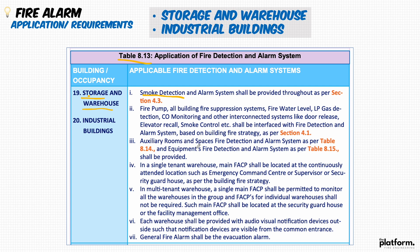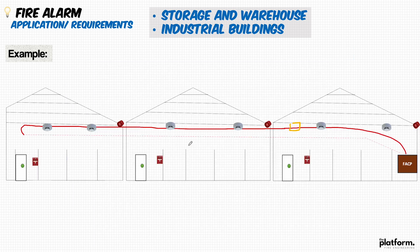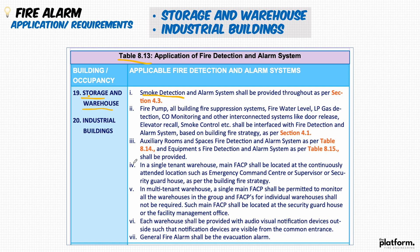Point number three: auxiliary rooms and spaces — the fire detection and alarm system should be provided there as well. For example, if you have an electrical room, a mechanical room, a store, or any other auxiliary room, you need to provide the fire alarm system inside those spaces as well.